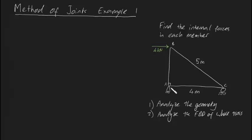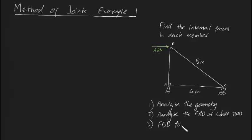That means we replace these supports with reaction forces, and then we figure out what those reaction forces are using a free body diagram of the whole truss. And then our last step is to use specifically method of joints, which means that we use a free body diagram for certain joints. This is the general process I'm going to be using to solve this problem.